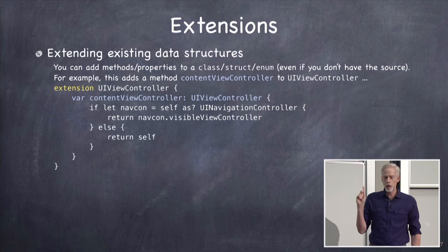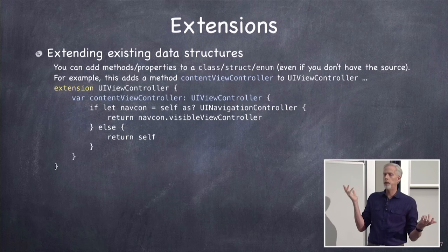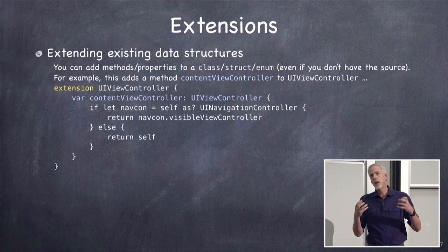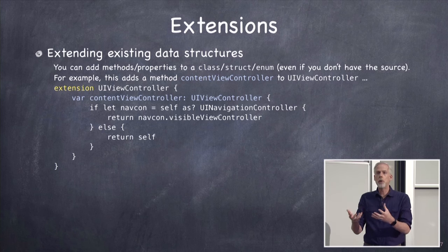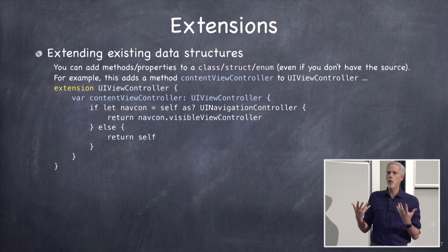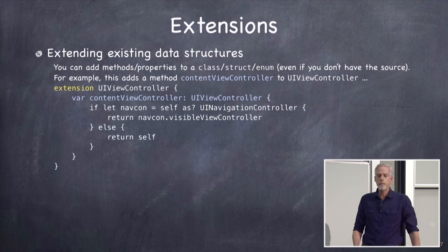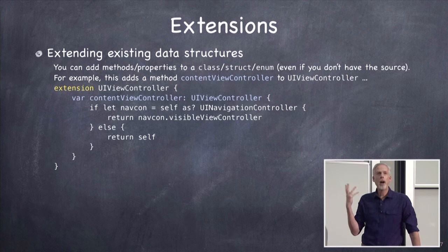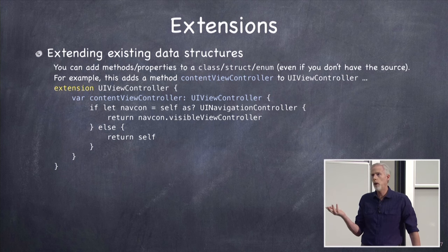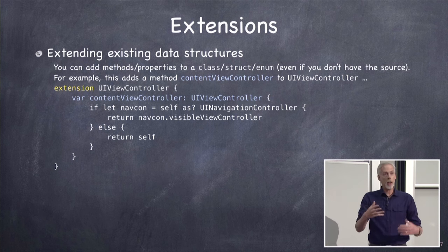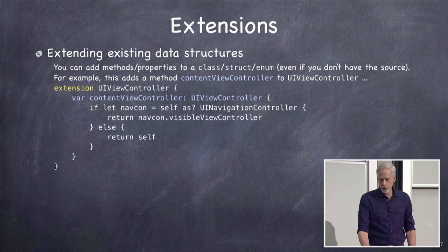The way we fixed that was checking if it was a navigation controller first and looking at the visible view controller. We could put that code into an extension of UIViewController by creating a new var called 'contentViewController'. If it's a navigation controller, it's the content; if not, it's just self. By adding this extension, UIViewController and all its subclasses will now have this var — and I didn't have to subclass UIViewController to do it.